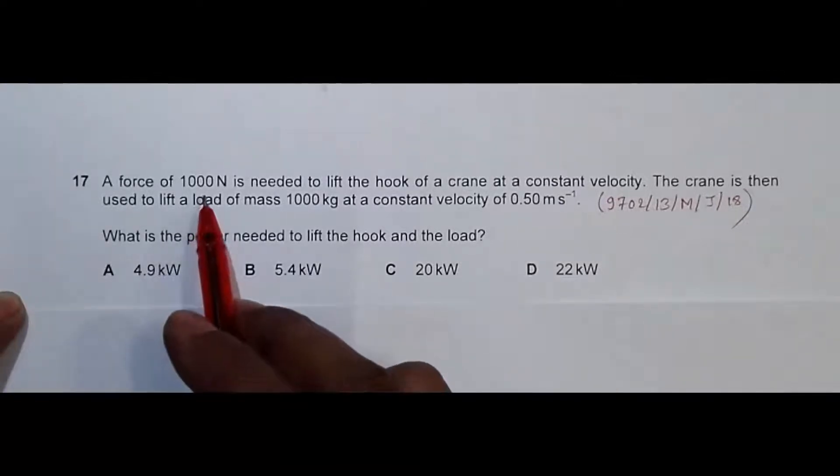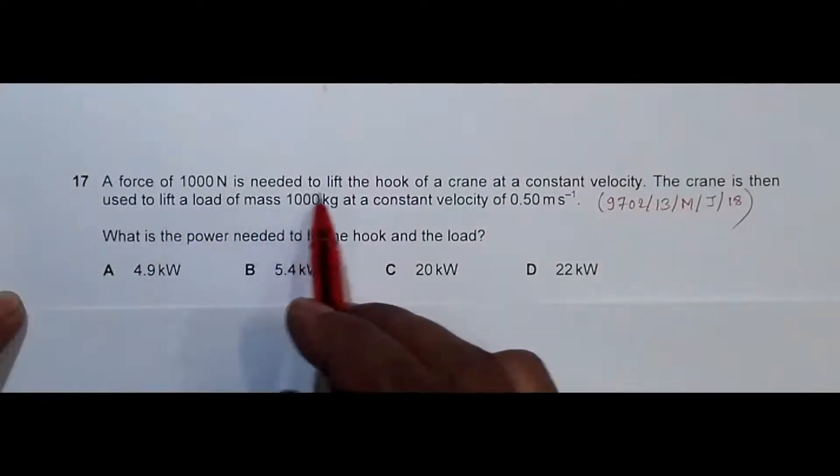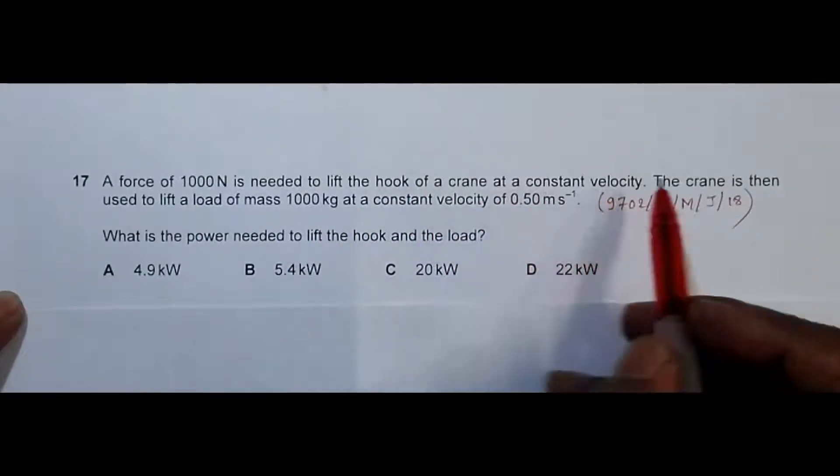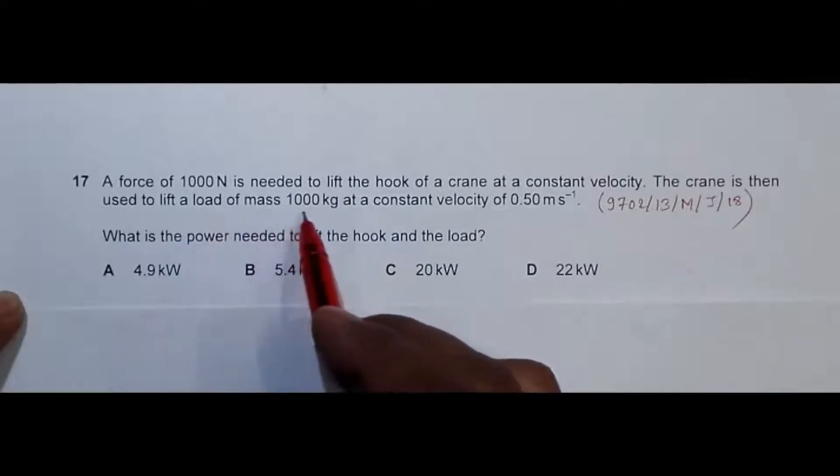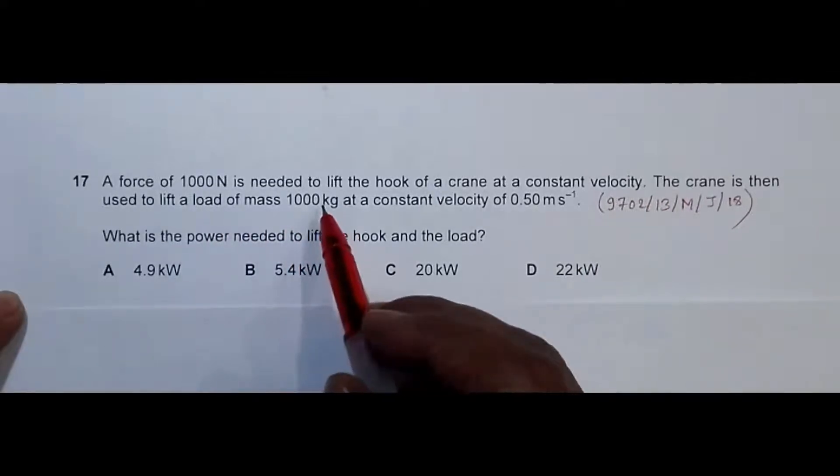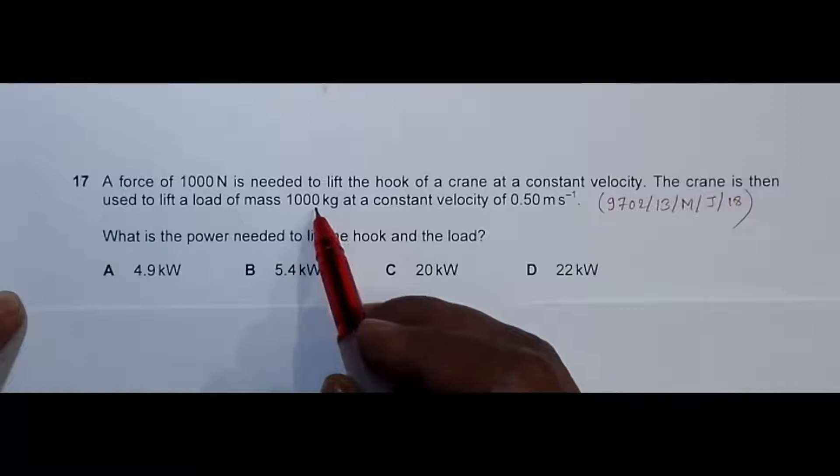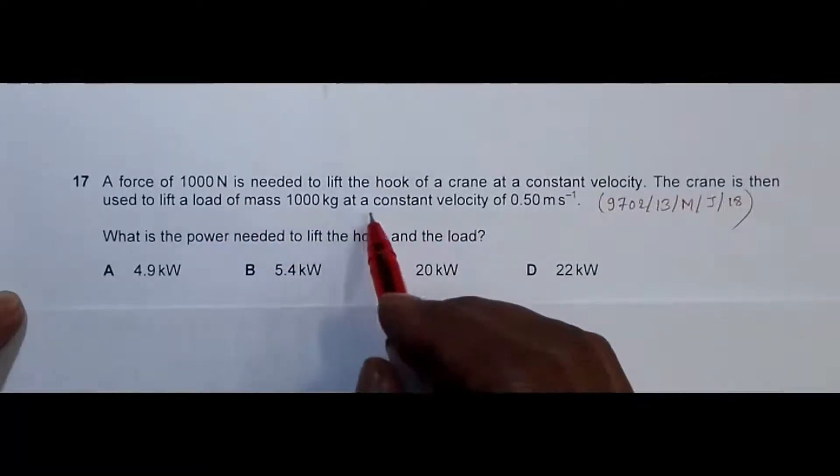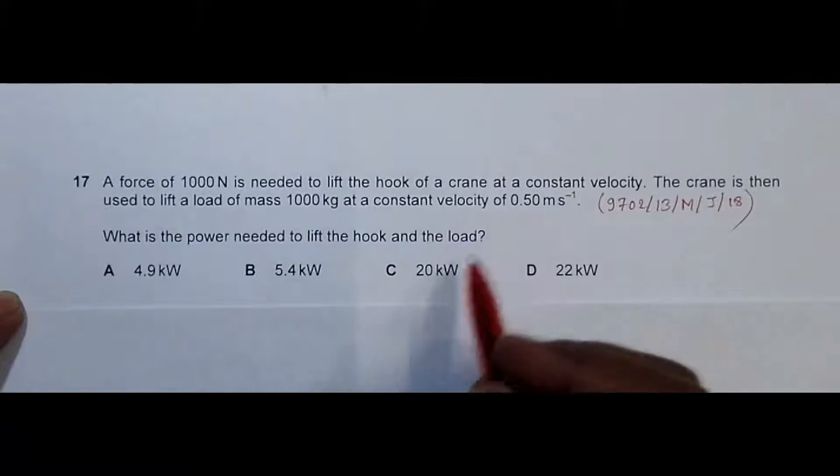It says that the force of 1000 Newton is needed to lift the hook of a crane at a constant velocity. The crane is then used to lift a load of mass 1000 kg. So that means that the combined load now will be the mass of this thing and the mass of the crane itself at a constant velocity of 0.50 meter per second.